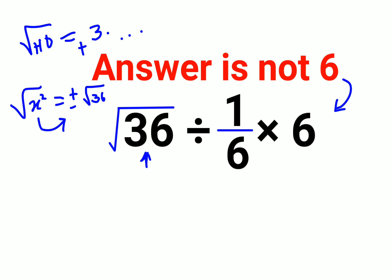So here in this case we can very directly say it is 6 divided by 1 upon 6 into 6.